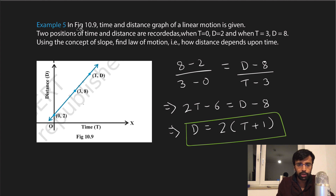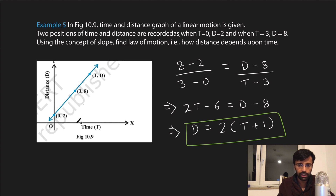In the next example (Figure 10.9), a time-distance graph of linear motion is given. Time is on the X-axis (T) and distance on the Y-axis (D). Two positions are recorded: when time is zero, distance is two — point (0, 2); and when time is three, distance is eight — point (3, 8). We need to find the law of motion using the concept of slope.